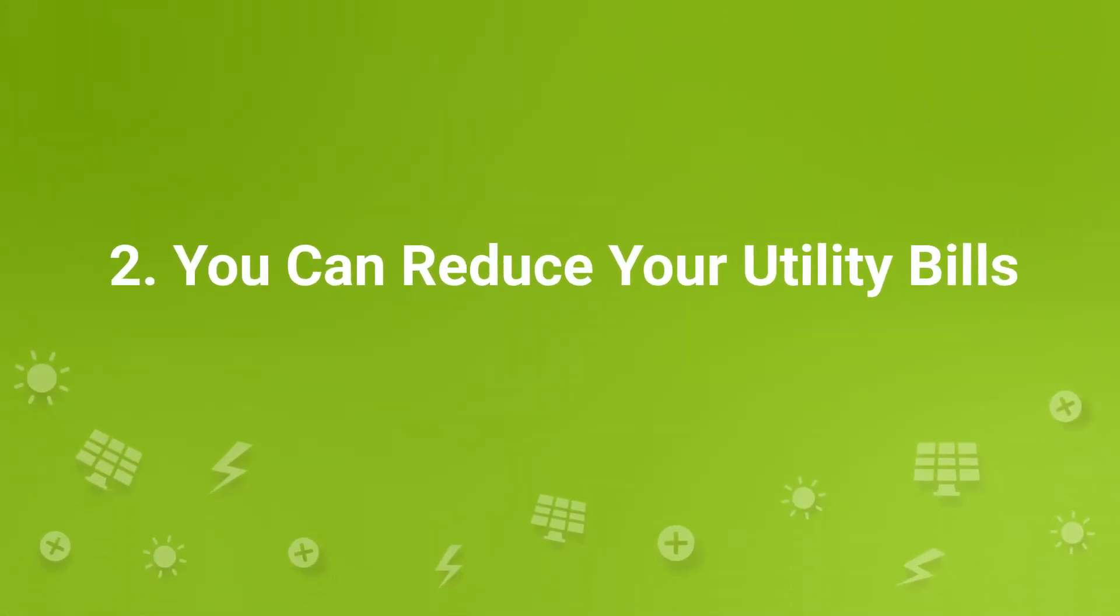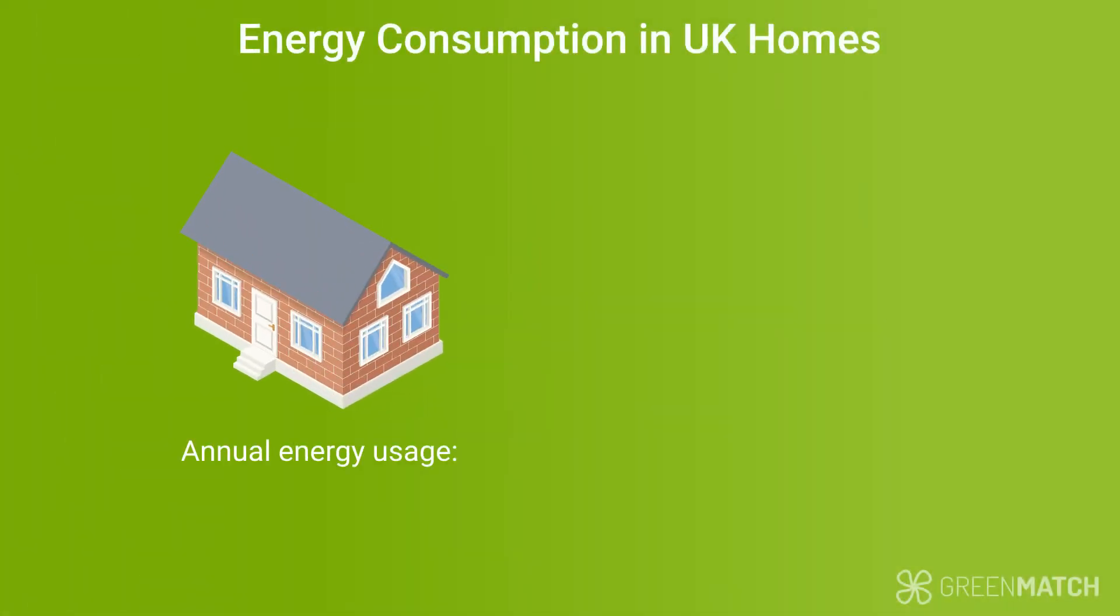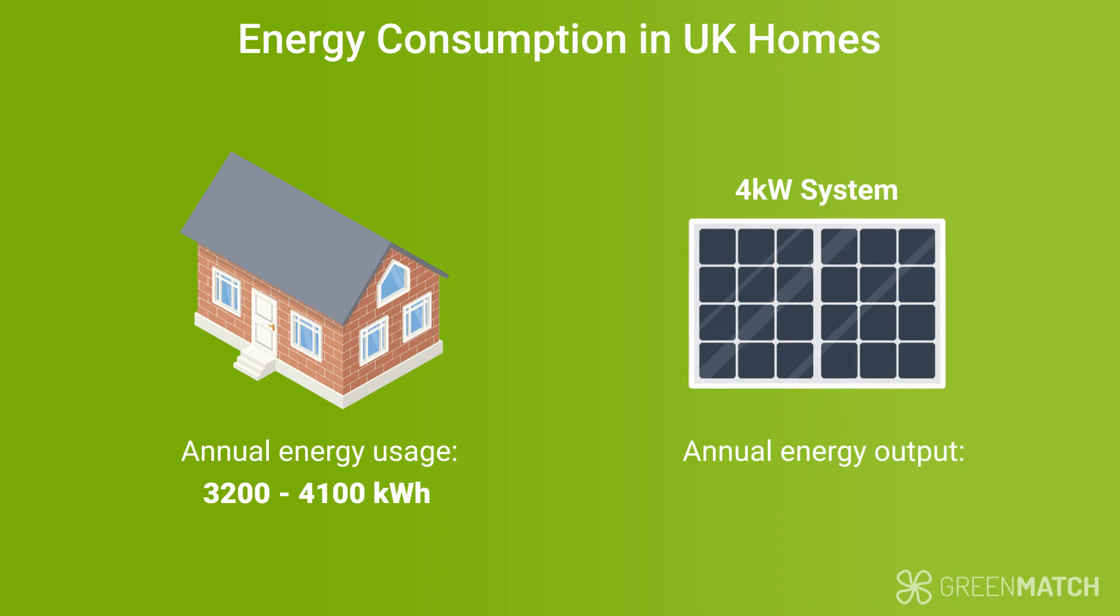You can reduce your utility bills. The average UK home has an annual energy consumption of 3,200 to 4,100 kWh and a 4kW system has an output of 3,400 kWh, meaning that, in perfect conditions, your panels could produce 83 to 106% of your energy needs.